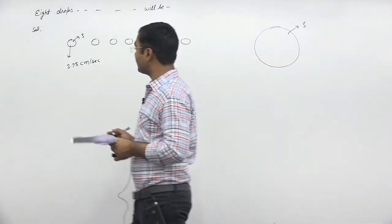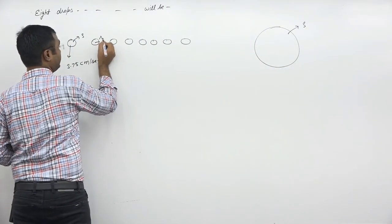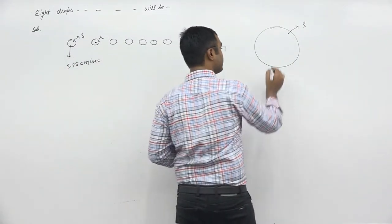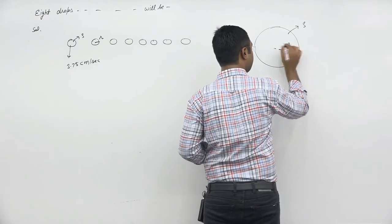One more time, first of all the volume. Each radius is small r, every radius is small r. This combined drop will have capital R radius, capital R value.